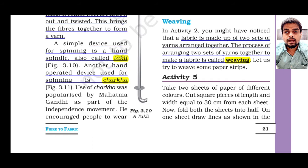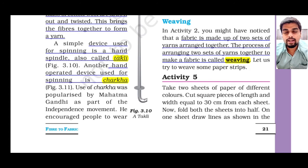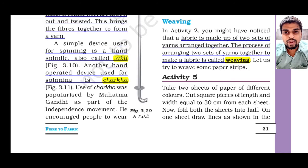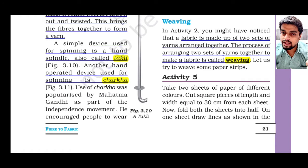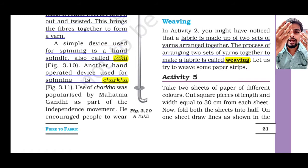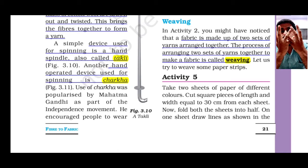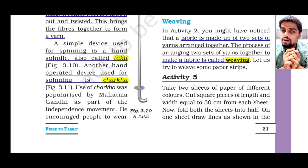Let's start with the process of weaving. As given in your textbook, weaving is the process of arranging two sets of yarns together to make a fabric. Let me consider one hand as one set of yarn and my other hand as another set. When I arrange both sets of yarns together like this, they create a fabric. It is very simple.